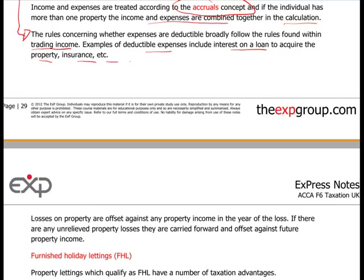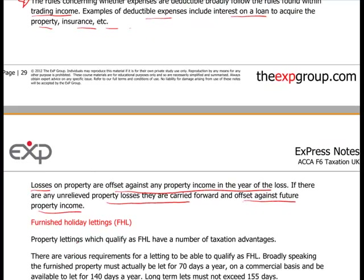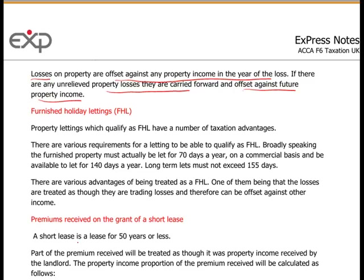Property losses are offset against any property income in the year of the loss. If there isn't enough income, they are carried forward and offset against future property income only — you can't do anything else with them. However, furnished holiday lettings offer more flexibility: if a property qualifies as a furnished holiday letting, any loss can be treated as a trading loss and offset against other income such as trading income or salaried income — much more generous than normal property losses.